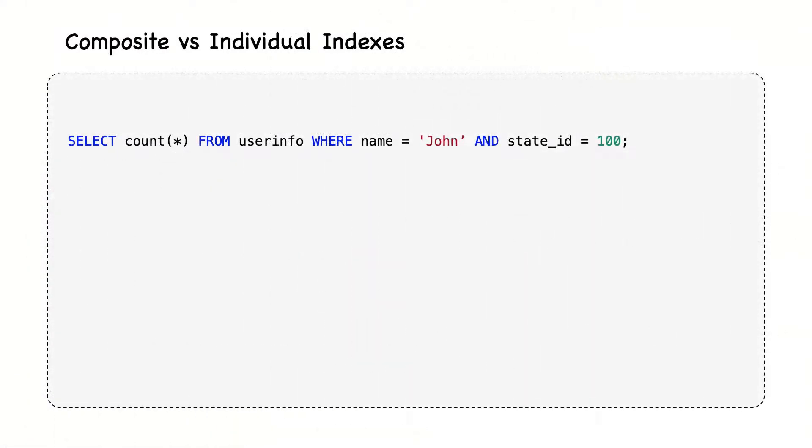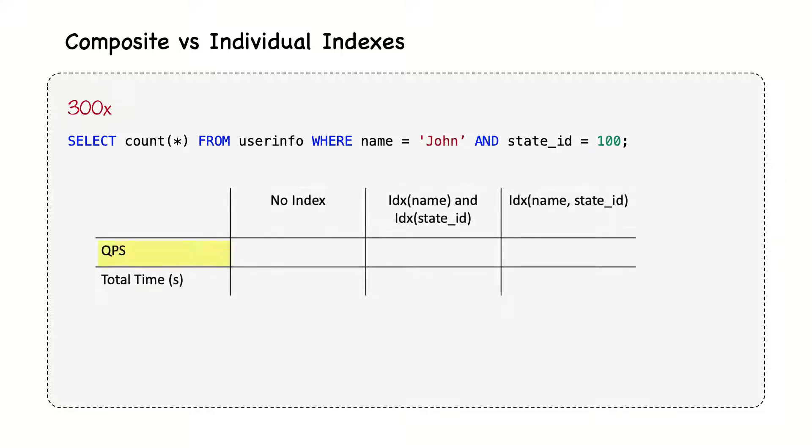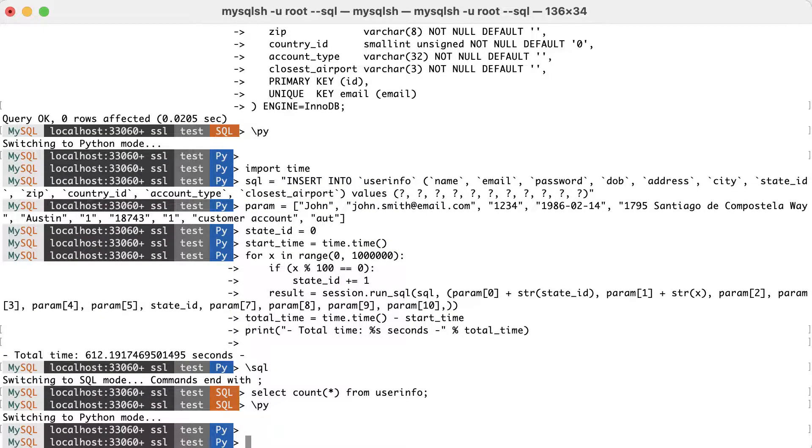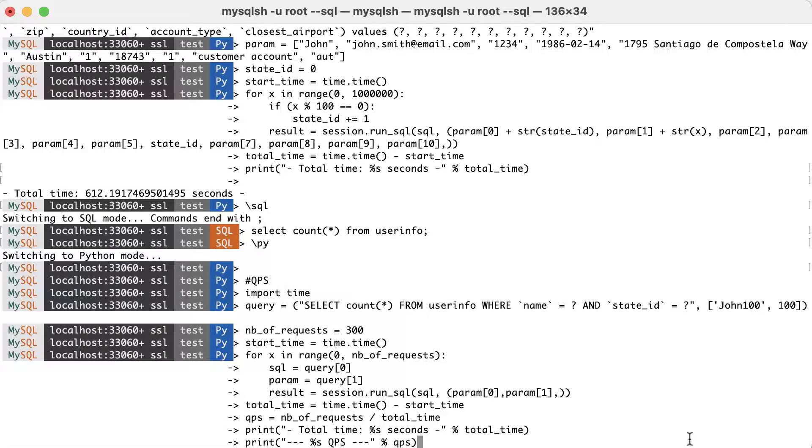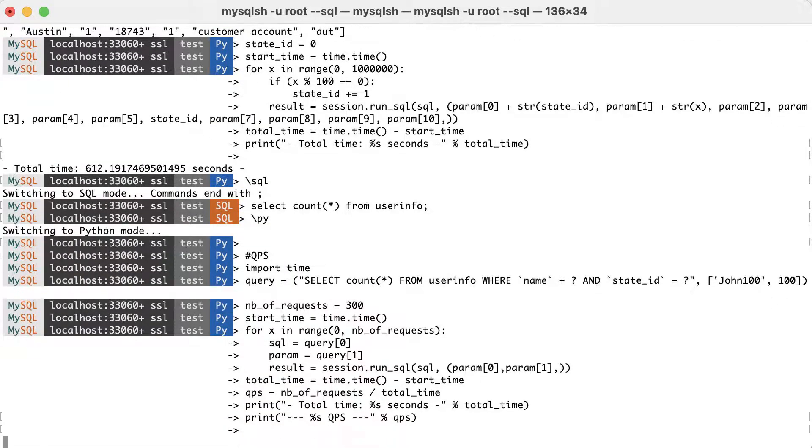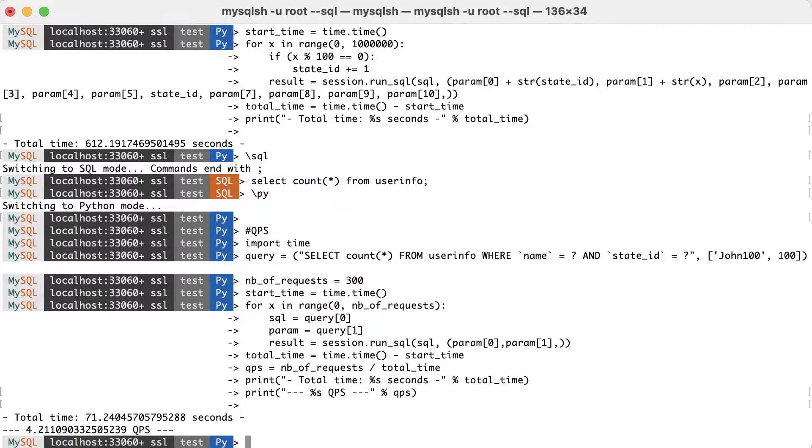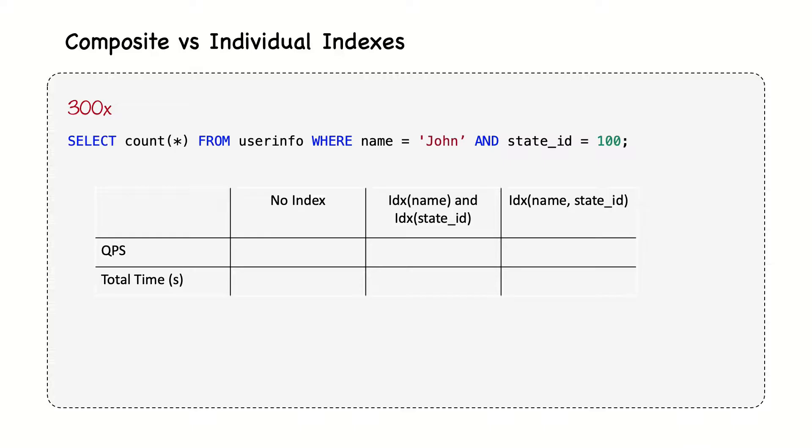We'll execute this query 300 times. And we want to measure how many queries were executed per second and the total time. We'll do this for the case with no index, individual indexes, and composite index. To execute the query 300 times, we'll use again a Python script that looks like this. Copy-paste.